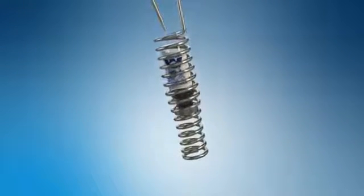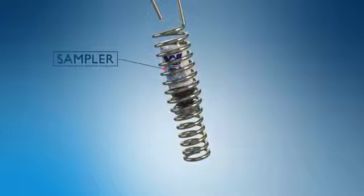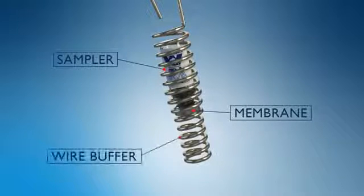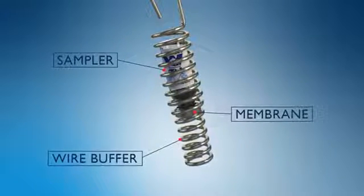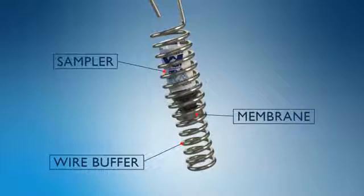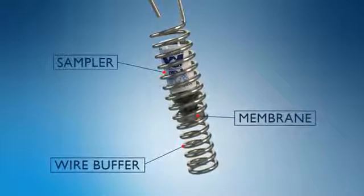The wire hanger is designed for easy insertion and removal of the sampler, while also holding the sampler securely in position. The bottom half of the hanger provides a wire buffer to protect the membrane of the sampler.